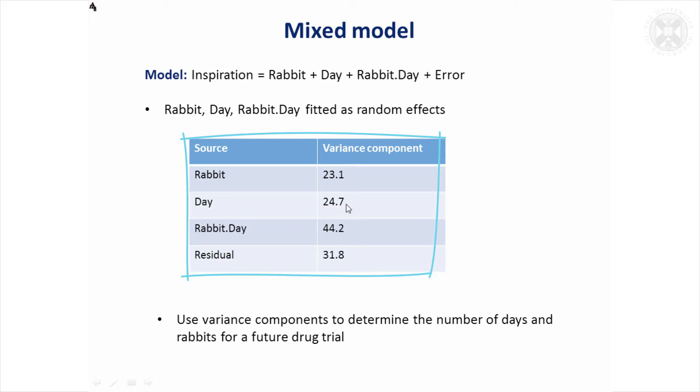We can see that there's variability, and this is more than expected by chance, between the rabbits, between the days. On a given day, the rabbits are going to vary more than expected by chance, in fact by quite a lot. And the rabbits' breaths vary within themselves. So the hundred breaths for each rabbit is quite variable too. We can use those values to plan future drug trials.